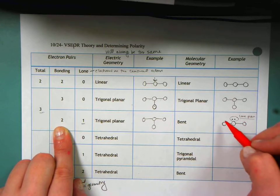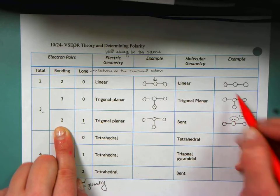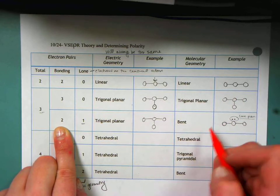So I've got two bonds, one lone pair on my central atom. And this has the molecular geometry of a bent structure.